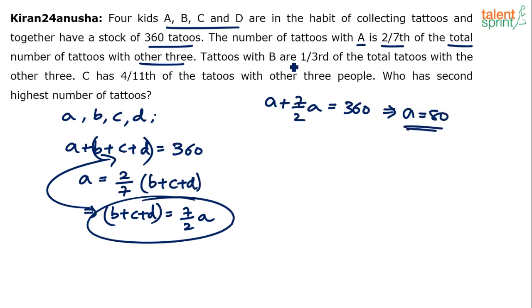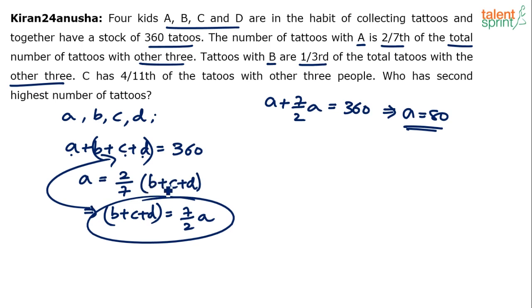Similarly, if you look at the other statements: tattoos with B are one-third of total tattoos with the other three, which means A plus C plus D this time. B equals to one-third of A plus C plus D. So A, C, D will be three times of B. Substitute back — B plus three times of B, which means 4B. 4B is 360, so B is equal to 90.